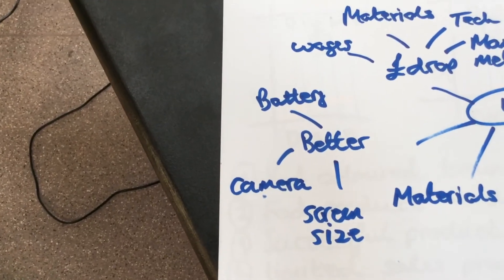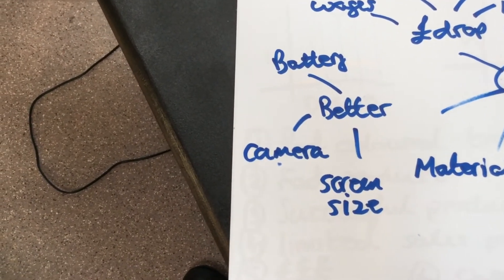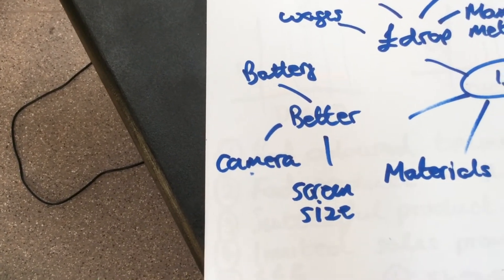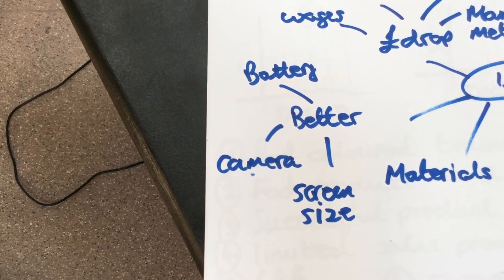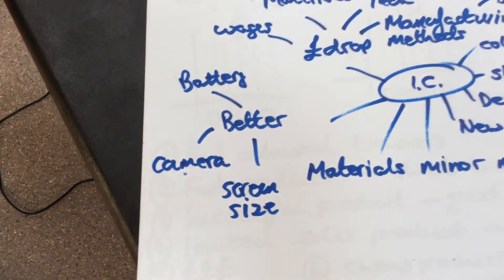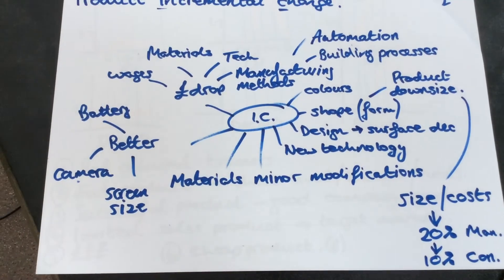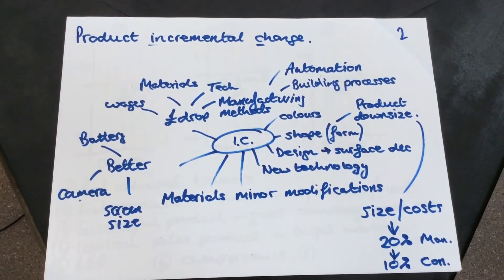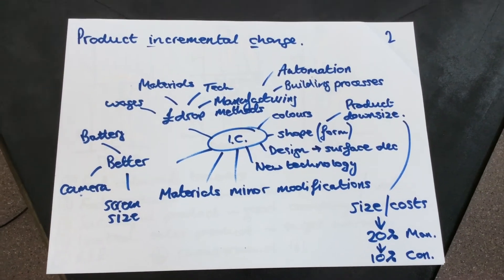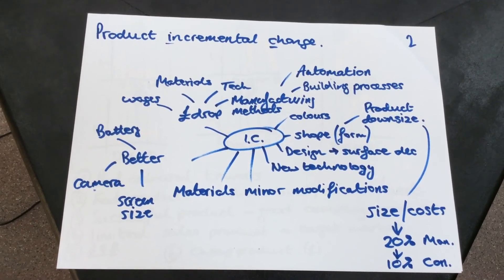If we use the phone as an example, they might have a better battery life, they might have a better camera, they might have a better screen size. All of those are very small incremental changes. Tune in for part three when we'll look at the product life cycle.